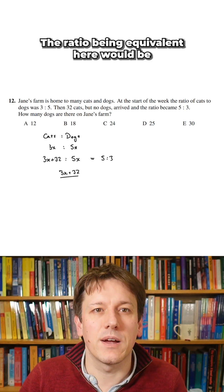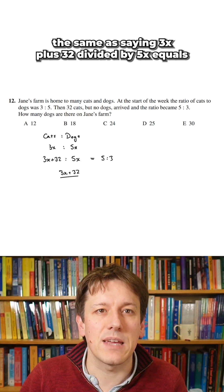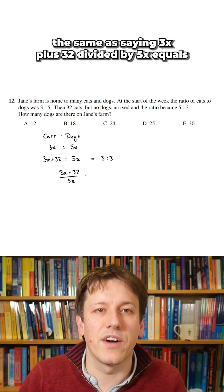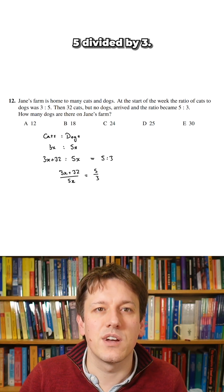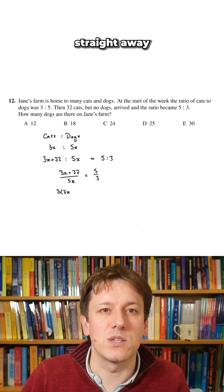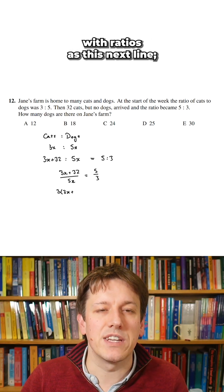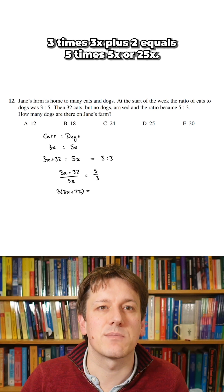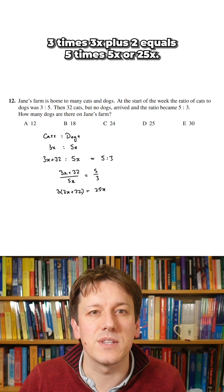The ratio being equivalent here would be the same as saying 3x plus 32 divided by 5x equals 5 divided by 3. You could write that straight away if you were confident with ratios as this next line 3 times 3x plus 32 equals 5 times 5x or 25x.